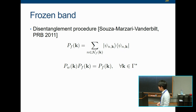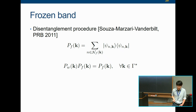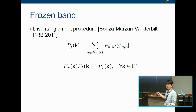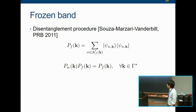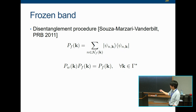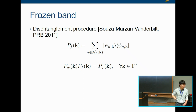Instead, you introduce something called frozen orbitals, denoted by PF. Within a certain energy window, you say your Wannier functions should exactly reproduce all the states in that energy window, at least for the k-points you have selected. This condition is mathematically realized by the constraint that the projector corresponding to the Wannier functions projected to the frozen window should equal the frozen window projector, for all k-points in the Brillouin zone.